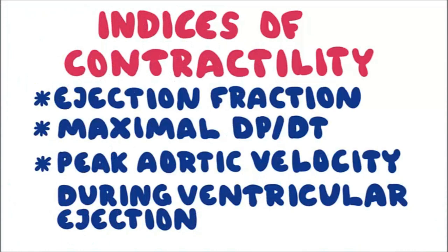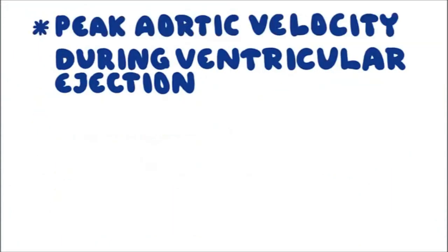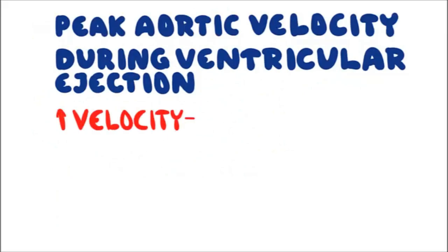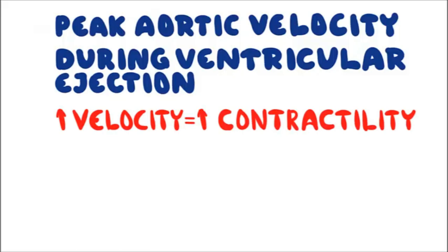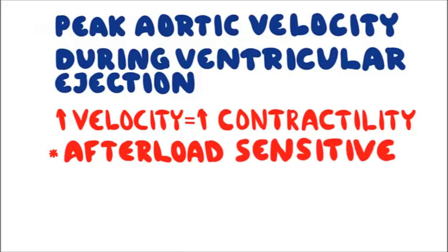The third index of contractility is peak aortic velocity during ventricular ejection. Increased velocity means increased contractility. However, this index is also not ideal because it is afterload sensitive — increased afterload decreases peak aortic velocity, whereas decreased afterload increases it.